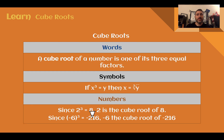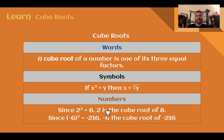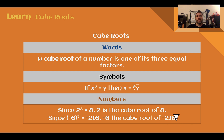Cube roots. A cube root is a number that is one of its three equal factors. We need to think what number times the same number times the same number again gives us the value under the radical sign. Since 2 to the 3rd power equals 8 — 2 times 2 is 4, times 2 again is 8 — that means 2 is the cube root of 8. Since negative 2 to the 3rd power is negative 8, that means negative 2 is the cube root of negative 8. Notice we're able to do the cube root of a negative number, unlike with square roots.